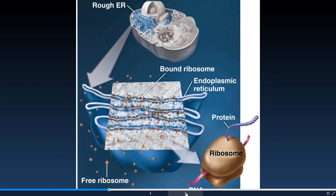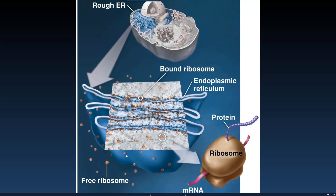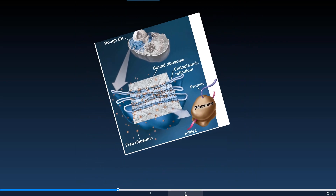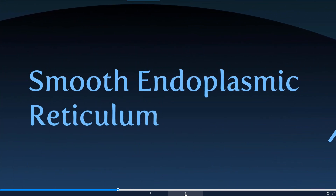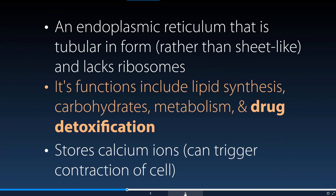Looking at the endoplasmic reticulum, there are ribosomes found free-floating in the cytoplasm, but also attached to the outside of the ER, because the ER is responsible for creating proteins among other things. In smooth endoplasmic reticulum, it consists of a tubular form that does not have ribosomes attached to the outside. Its function is specifically for lipid synthesis, creation of carbohydrates, aiding in metabolism, and drug detoxification — which is a really important component of the smooth ER.